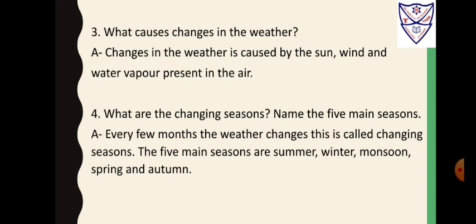Question 4 repeated: What are the changing seasons? Name the 5 main seasons. Answer: Every few months the weather changes — this is called changing seasons. The 5 main seasons are summer, winter, monsoon, spring and autumn.